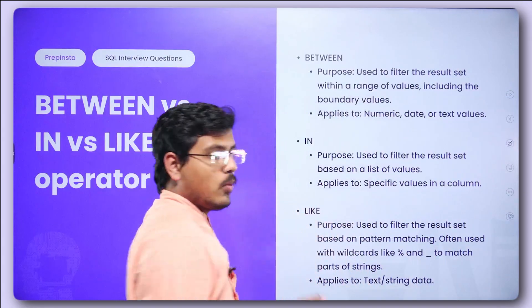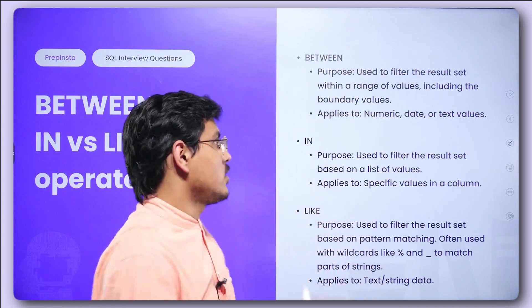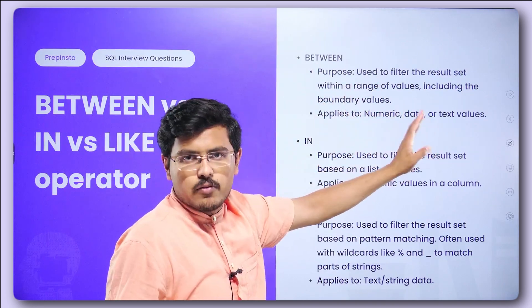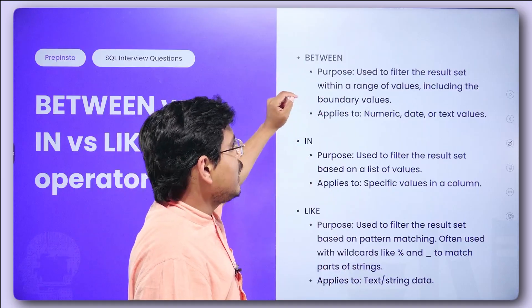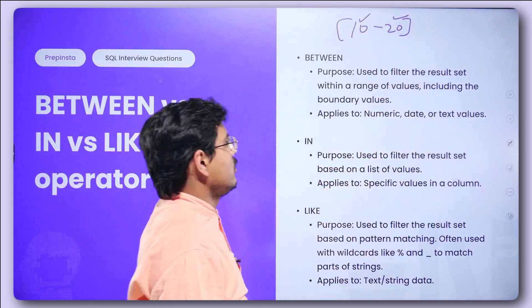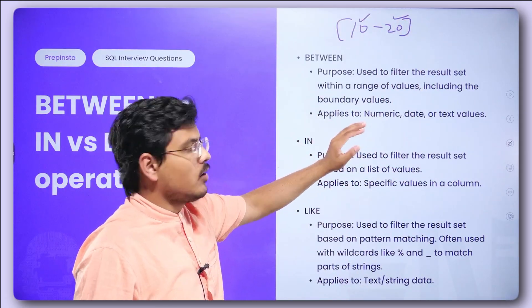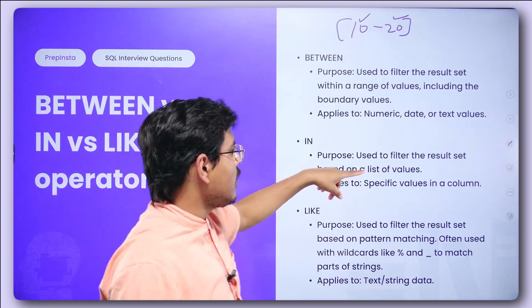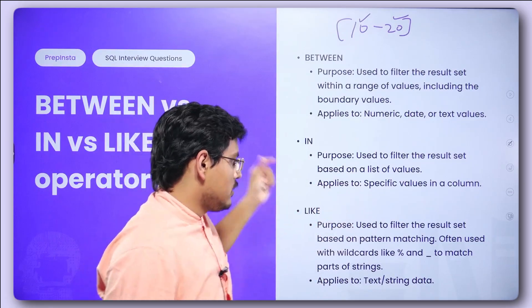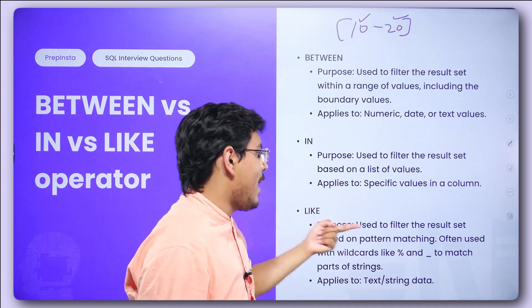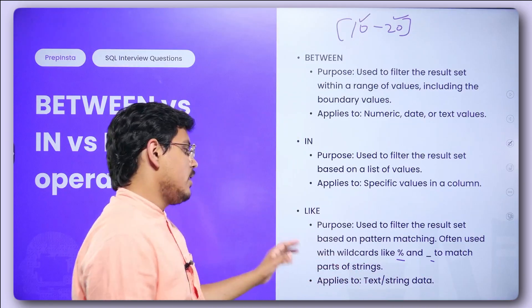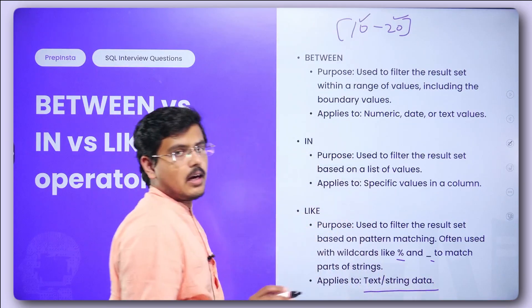Between versus in versus like operators: between is used to filter the result set within a range of values, including boundary values — for example from 10 to 20. It applies to numeric, date, or text values. In is used to filter based on a list of specific values in a column. Like is used for pattern matching, often used with wildcards like percent and underscore to match parts of strings, and applies only to text and string data.